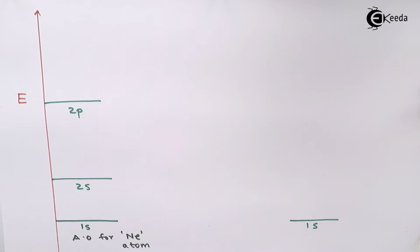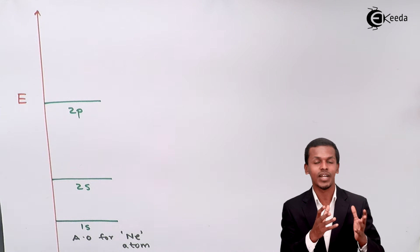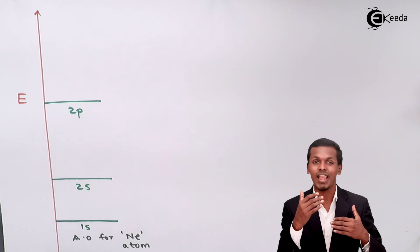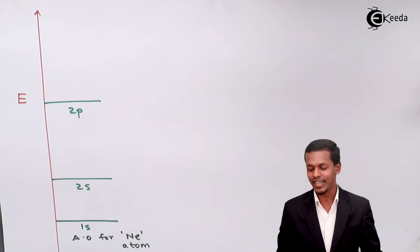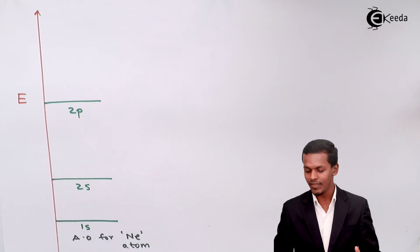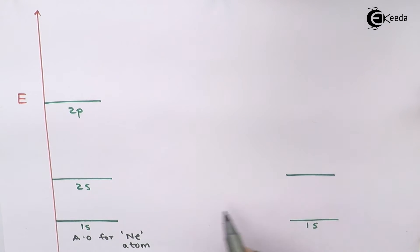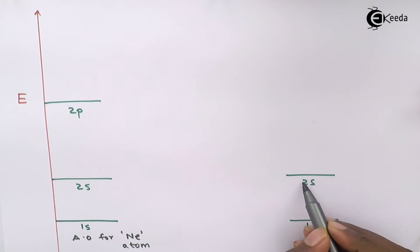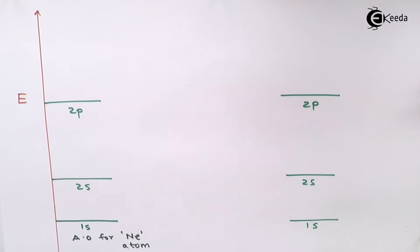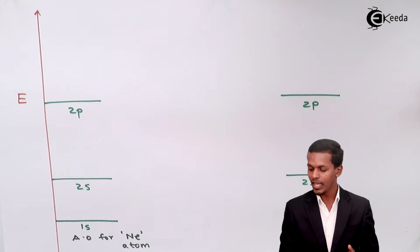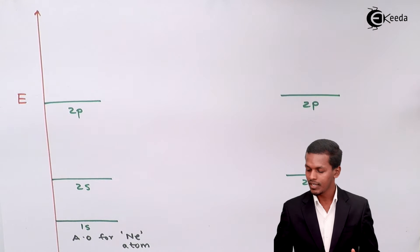If we were talking about two different hetero atoms — like carbon and oxygen combining — the 1s orbitals of each would have different energy levels due to differences in atomic size and electronegativity. But here we are dealing only with two identical neon atoms, so the energy levels are the same. I represent the 2s and 2p orbitals for the second neon atom accordingly.